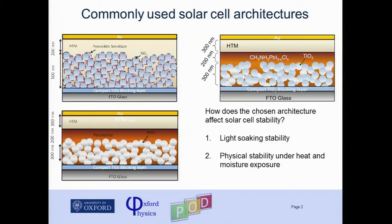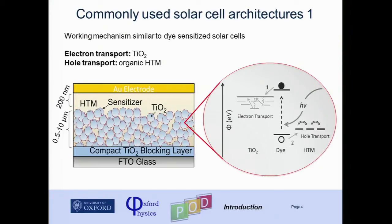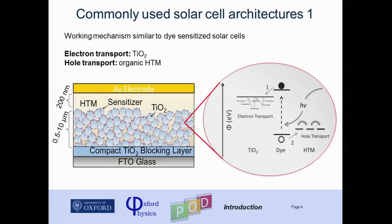The first architecture functions like a dye-sensitized solar cell — you can have a dye or a perovskite, it doesn't really matter. Light is absorbed, electrons are transferred to the TiO2, transported by a multiple trapping model, and holes are transported by hopping through the hole transporter. Crucially, in this structure, the electron transport occurs through the TiO2 and the hole transport occurs through the hole transporter. This is the key thing to bear in mind for the next few slides.